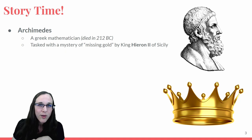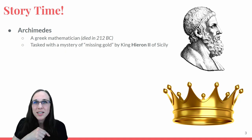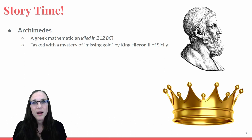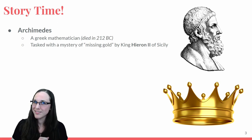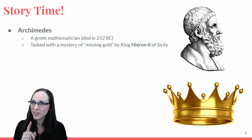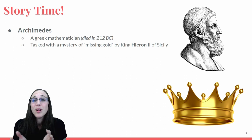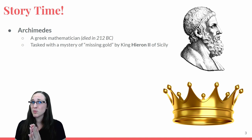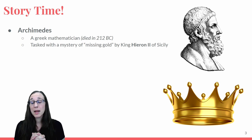The king said, 'Archimedes, do me a favor. I want you to figure out if the goldsmith cheated me. Did he make my crown pure gold, or did he put something else in there and pocket some of that gold for himself?' But there's a catch: you can't hurt the crown, scratch the crown, break the crown, or do anything that would damage it. So Archimedes was tasked with this almost impossible task at the time.